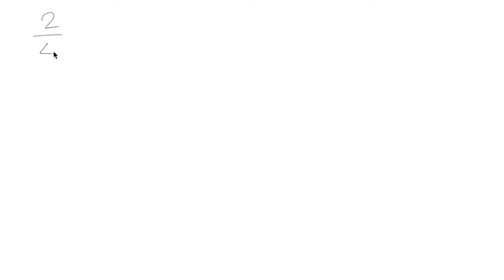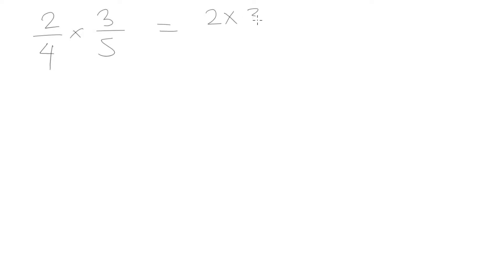A lot of this is going to be reviewed from your previous grades. Let's say we had 2 quarters multiplied by 3 fifths. If you recall from your rules of multiplying fractions, when we have a fraction multiplied by another fraction, we can simply perform that by multiplying the numerators and multiplying the denominators. So that is going to be simplified to 6 over 20.